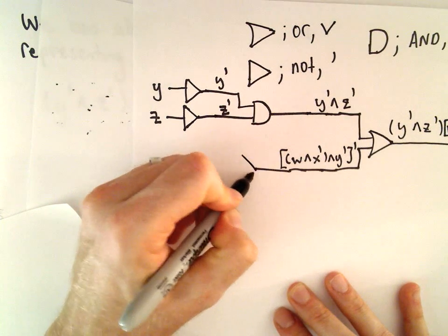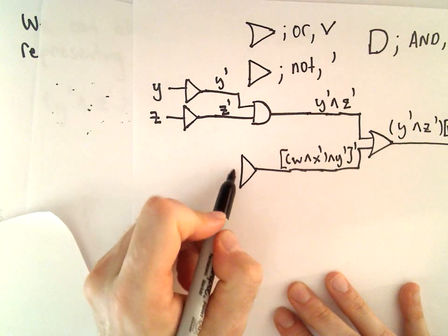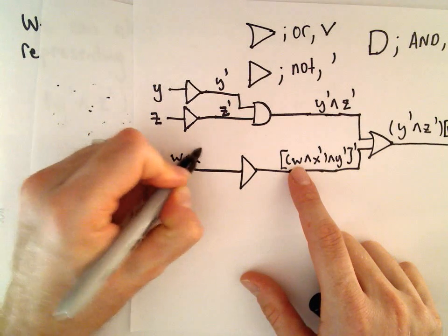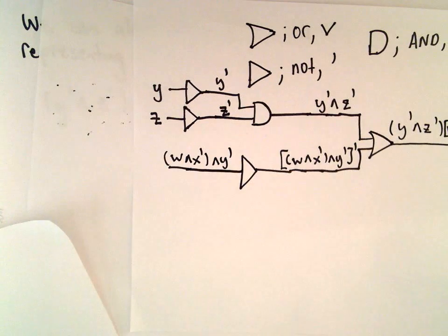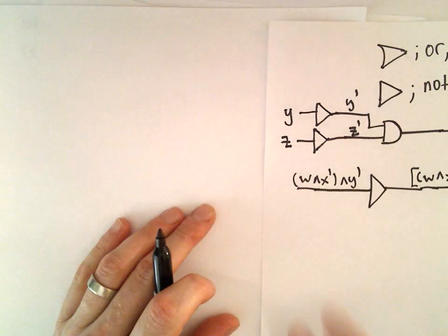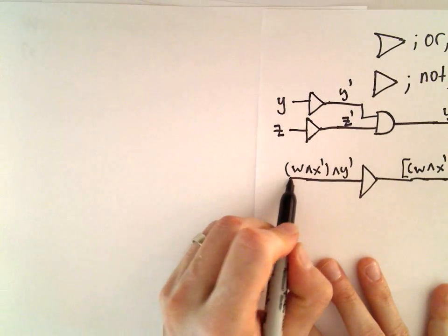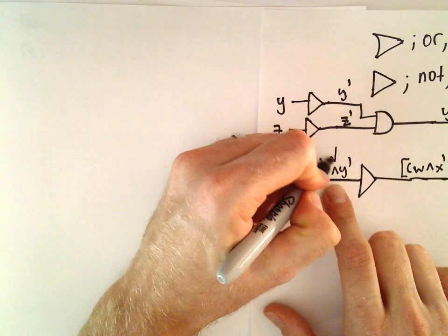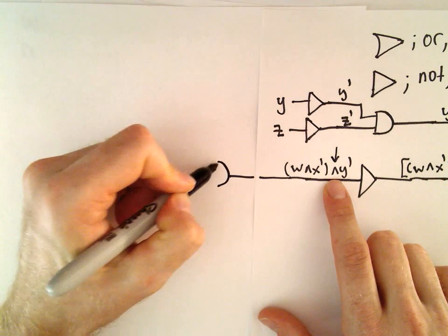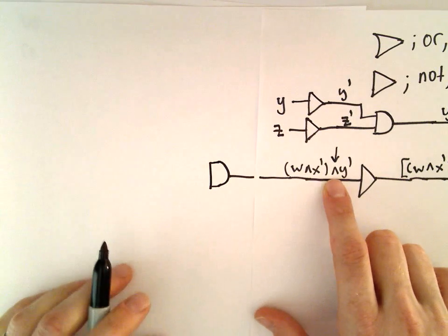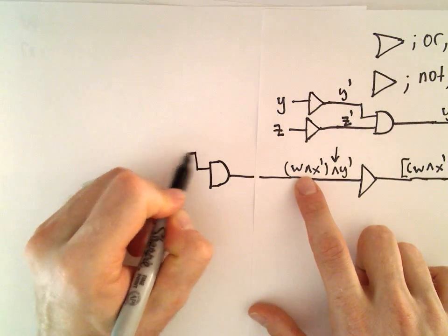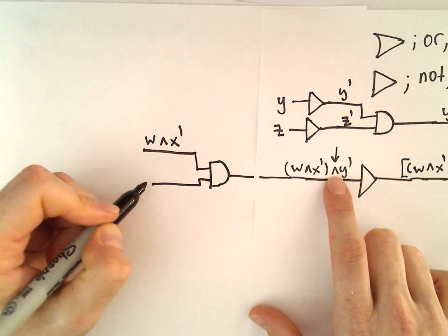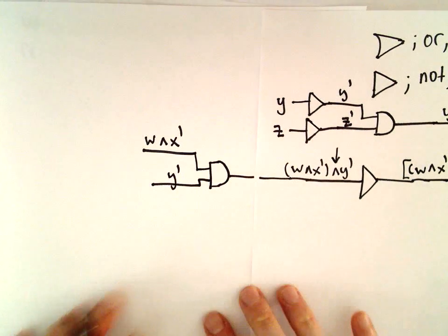There's our NOT gate. Coming into that, we would have the expression W and NOT X and NOT Y. Let me give myself a little more room here. Now we've got an AND statement. Just looking at my AND part here, I'm going to create an AND gate. The AND is in between the statement W and NOT X, and the other part would be NOT Y.